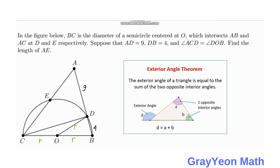We can say that triangle COD is actually an isosceles triangle. In an isosceles triangle, the angles opposite the two equal sides are congruent. So if one base angle is theta, then the other base angle is also theta.